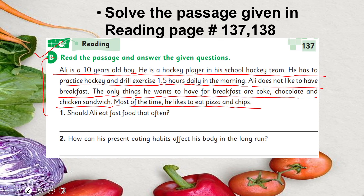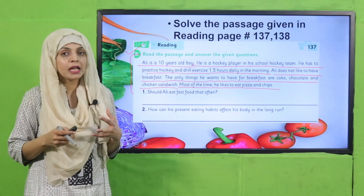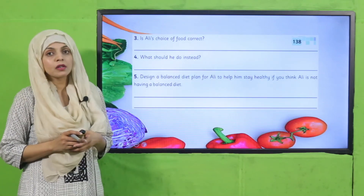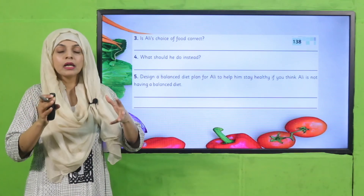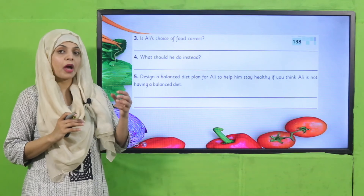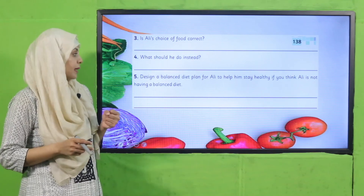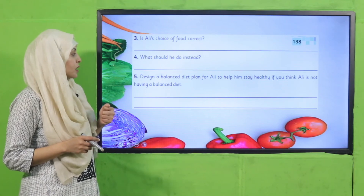Should we really eat fast food that often? Of course not. How can his present eating habits affect his body in the long term? When you consume too much sugar and fat, this will make you fat, and this is not healthy over a longer time. Is Ali's choice of food correct? No. He must take food from all the food groups - dry fruits, carbohydrates, fruits and vegetables, meat, and grains - to keep himself healthy.